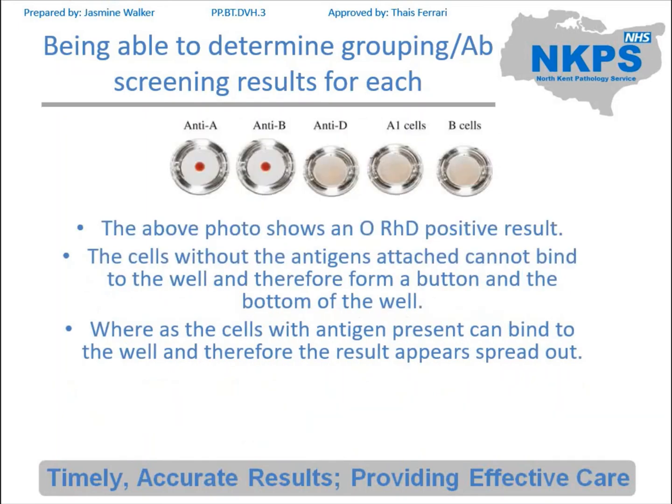Finally we're going to go through the solid phase. This is an O positive patient, so you can see why this could be confusing. The anti-A and the anti-B are negative, the D, A1 cells and B cells are all positive.